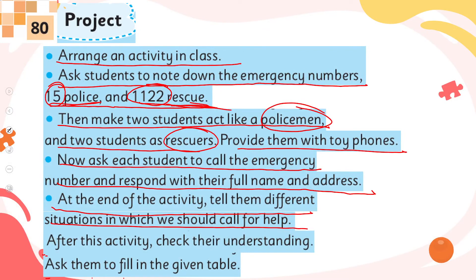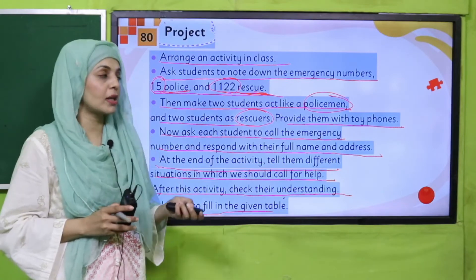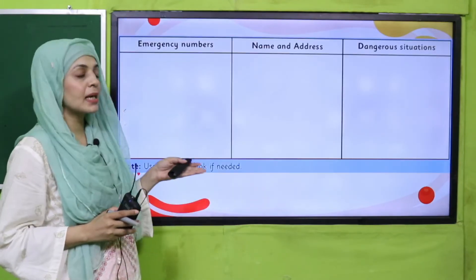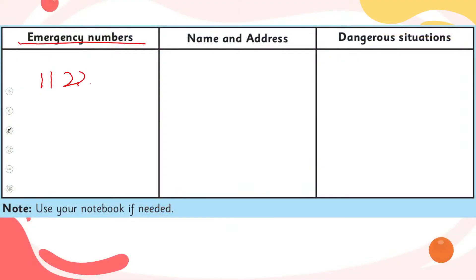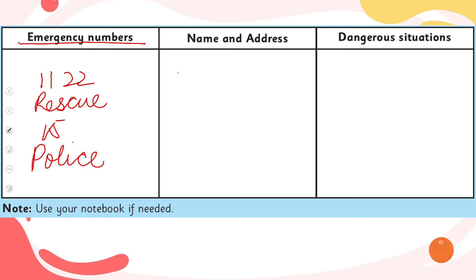After this activity, check their understanding and ask them to fulfill the given table. You have to fill the table in which you write the emergency numbers: 1-1-2 is the rescue number and 1-5 is for police. Then you will write down your name and your address in the spaces provided.